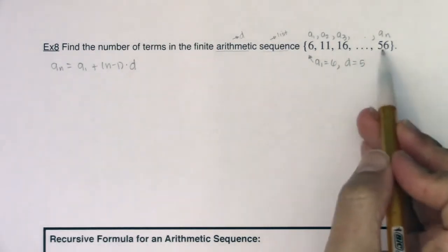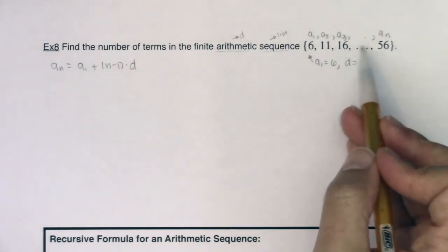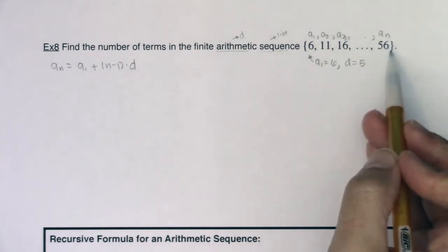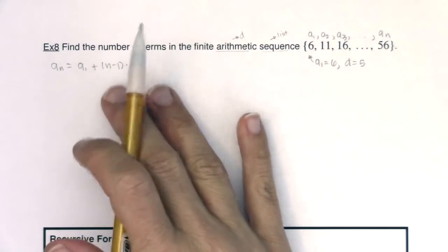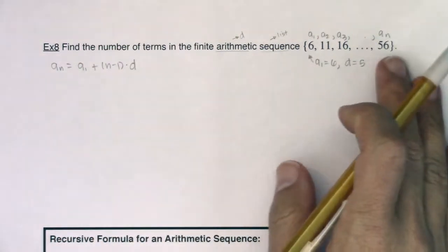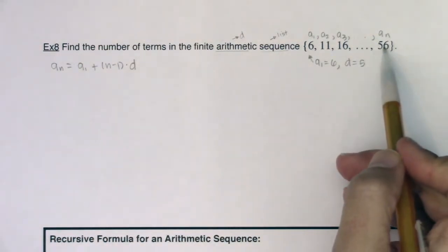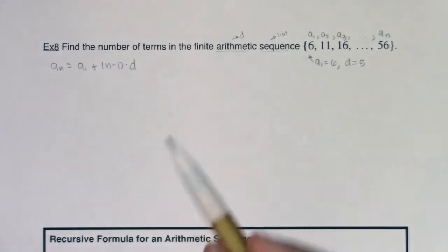Admittedly I could count—because it's not too far out we could sit here and keep adding 5 and count how many terms out we needed to go, and that would be acceptable—but I want to show you how to do it with a formula. Because what if this was like a thousand terms out? I don't want to count that many terms, so let's be more efficient.